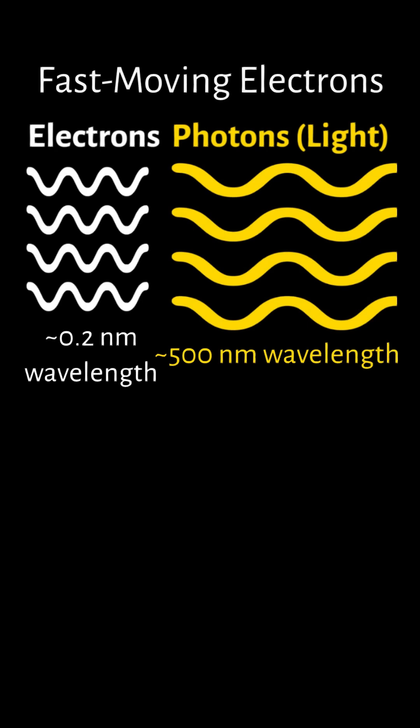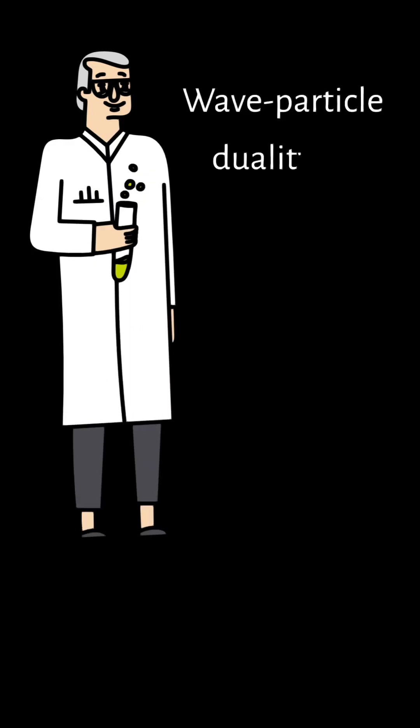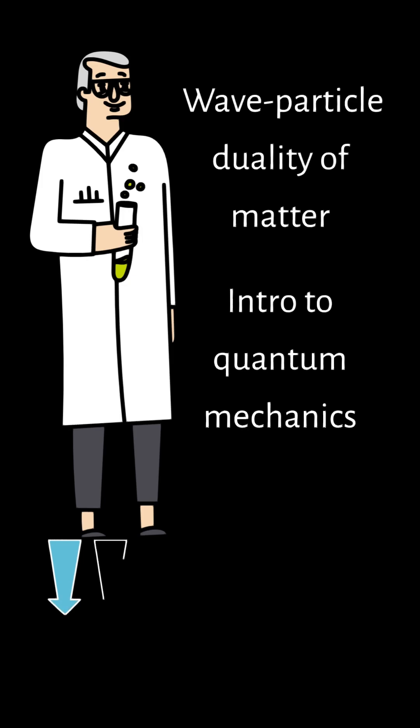Since fast-moving electrons have much shorter wavelengths than visible light, they can be used to examine structures such as individual atoms. If you'd like to learn more about the wave-particle duality of matter or an introduction to quantum mechanics, please check out the attached video.